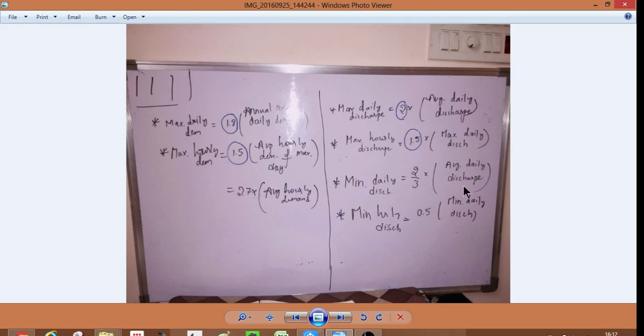Minimum daily discharge is 2/3 average daily discharge, and minimum hourly discharge is 1/5. Similarly here it is 0.5 minimum daily discharge. Maximum hourly discharge is 1.5 maximum daily discharge.